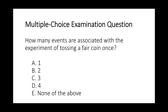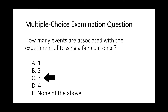Multiple-choice examination question. How many events are associated with the experiment of tossing a fair coin once? A. 1. B. 2. C. 3. D. 4. E. None of the above.